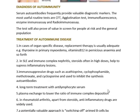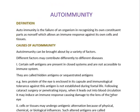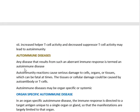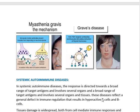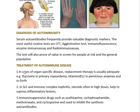In summary, the autoimmunity topic covered the definition of autoimmunity, the causes of autoimmunity, and the different types of autoimmune diseases — organ-specific and systemic. We also went through diagnostic methods and the treatment of autoimmune diseases. This is all about autoimmunity, which is also called autoallergy. Thank you.